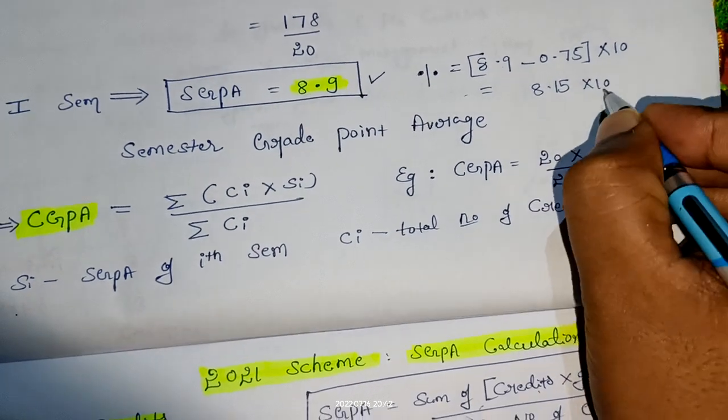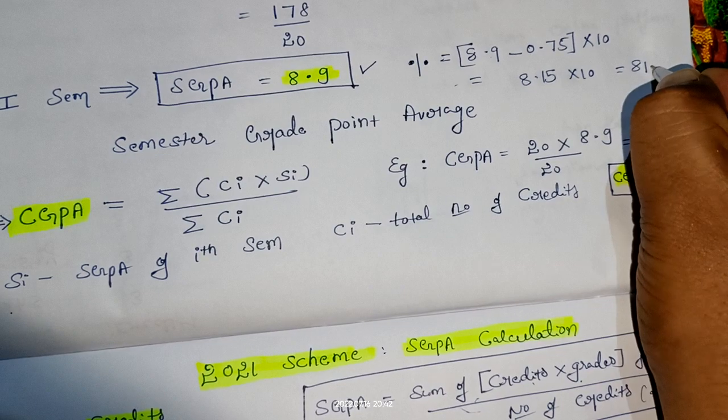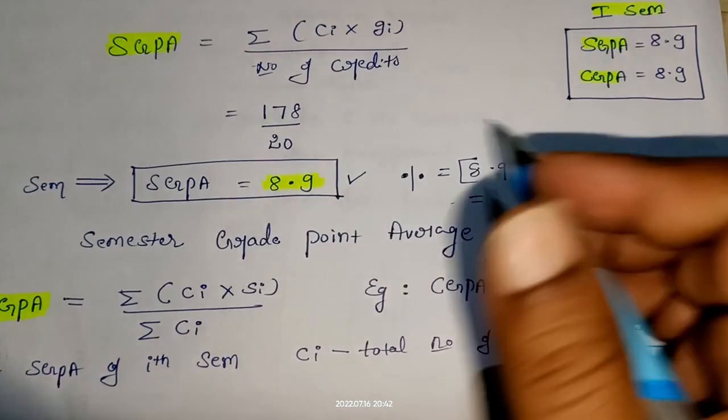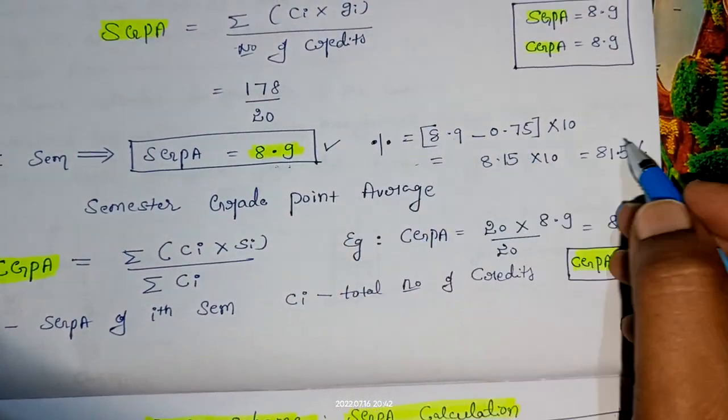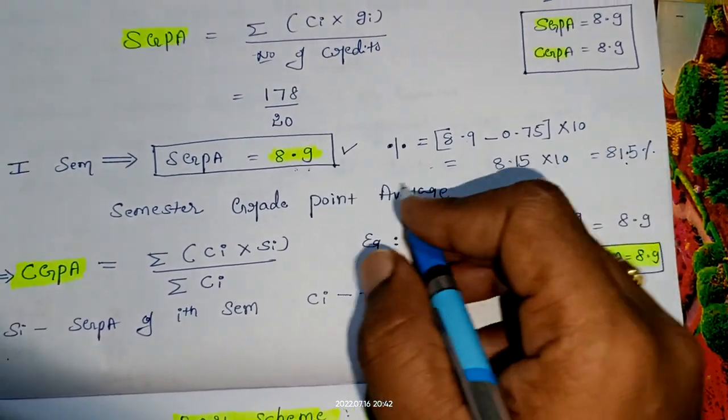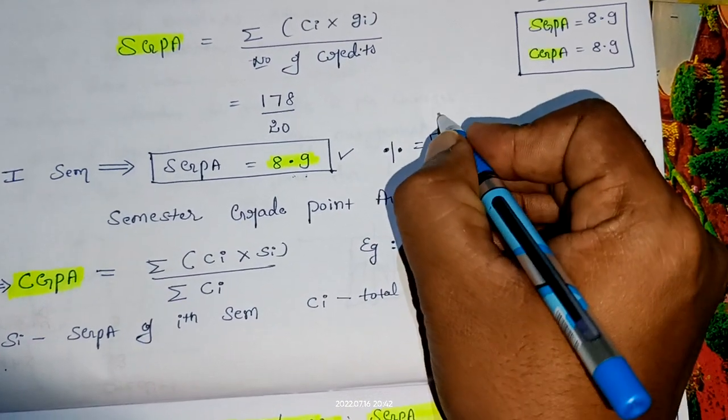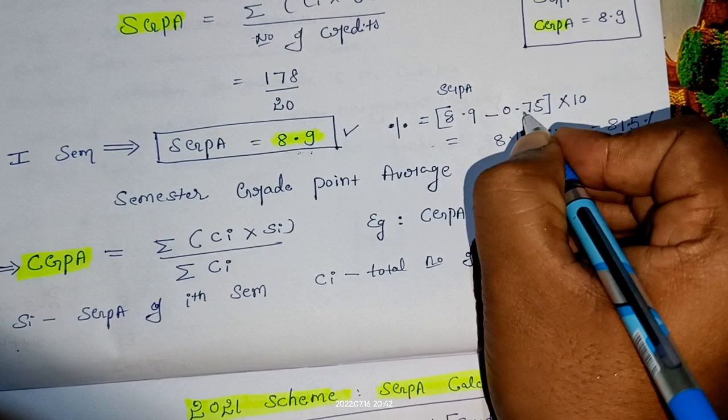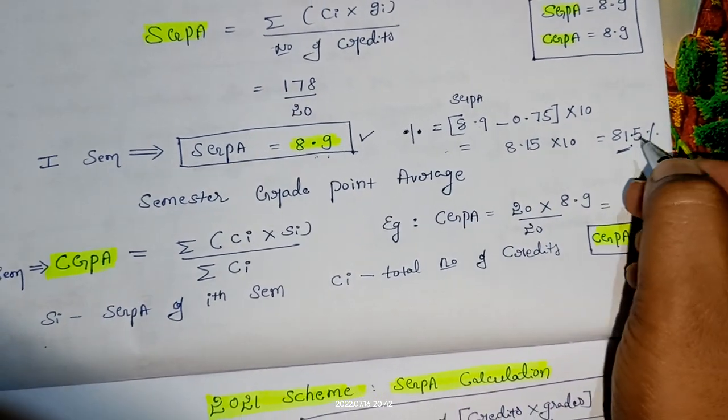If I subtract and multiply by 10, overall this is 81.5 percent. If SGPA is 8.9, he will get 81.5 percent. For your individual percentage, it's just SGPA minus 0.75 into 10.